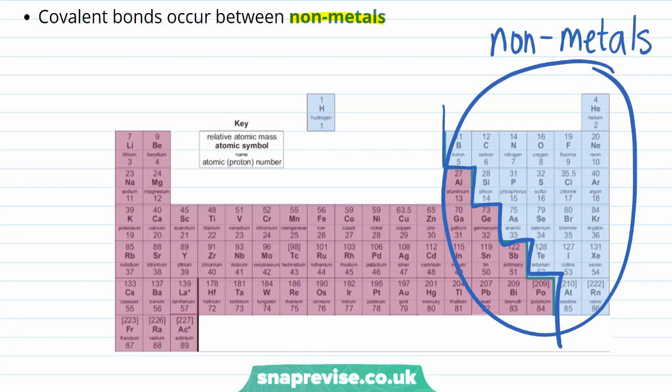Elements on the right hand side of the line will form covalent bonds between themselves and also with other nonmetals. This is because they all have a significant number of electrons in their outer shell and therefore it is not favourable for them to lose them all.